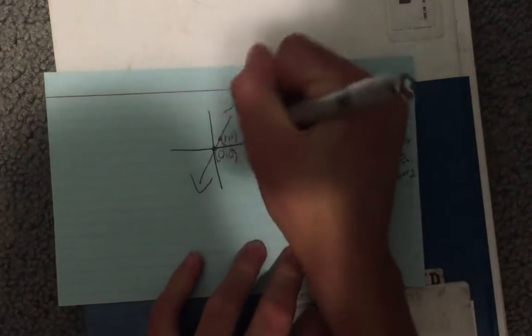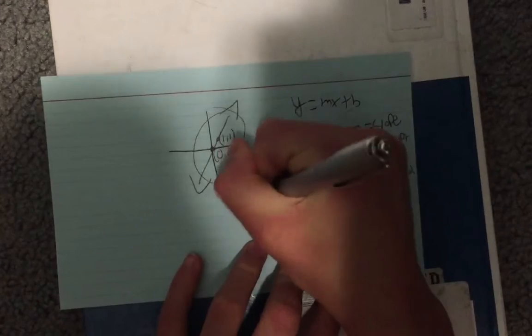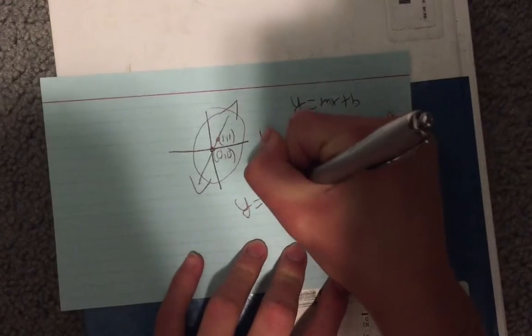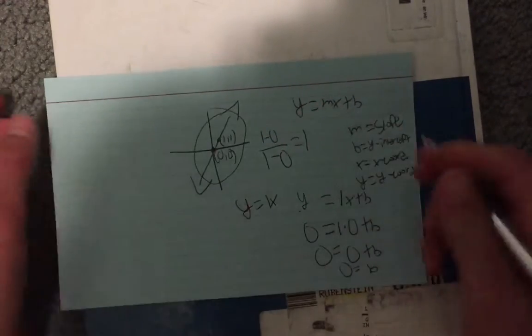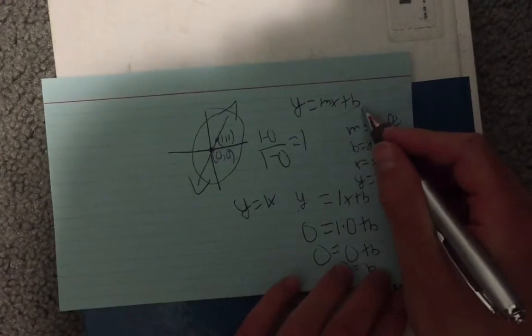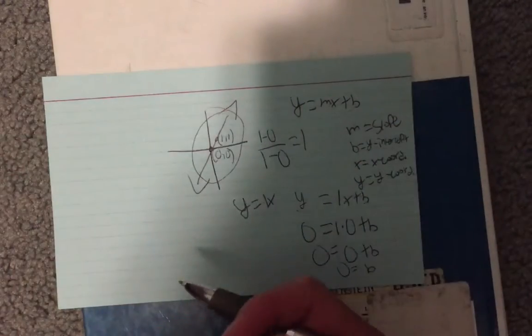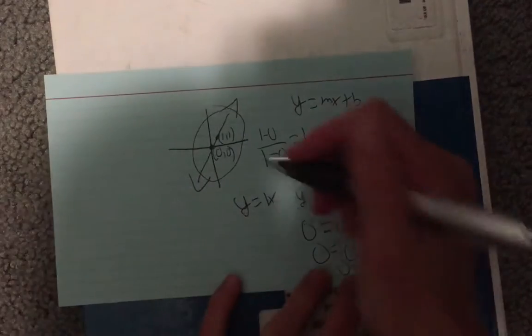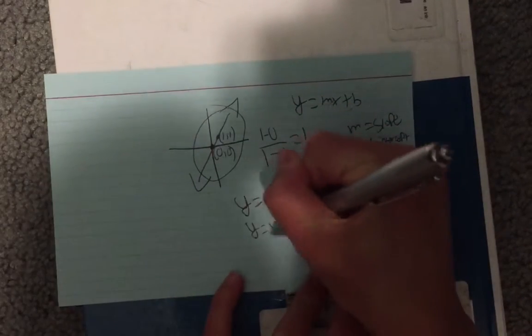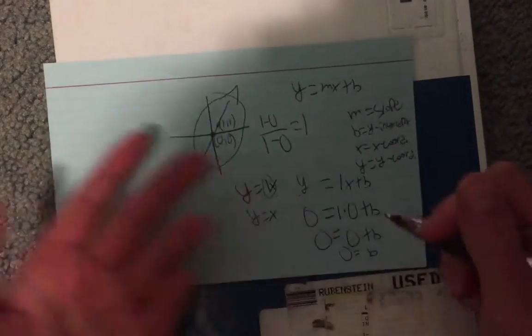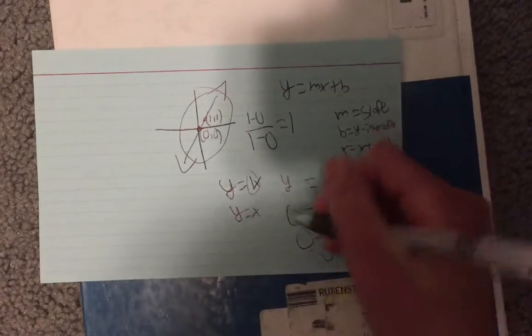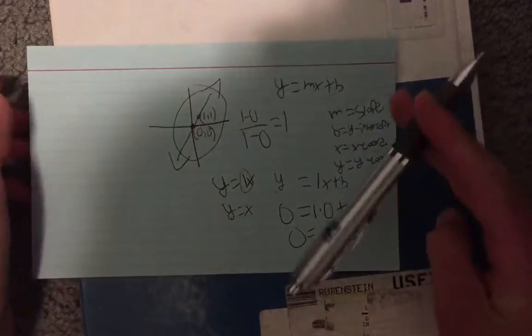So the equation of this line is y equals one x. And like I said, you need to have something right there. So if you don't have anything that's implied as plus zero. And you also could write y equals x. You don't need that one. If you don't have that one there, it means one.